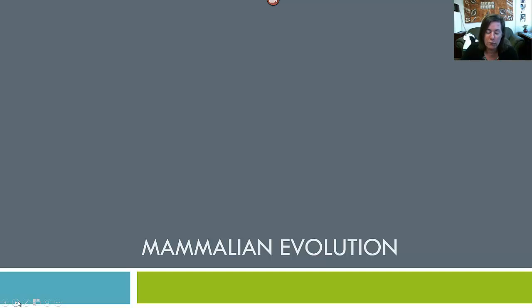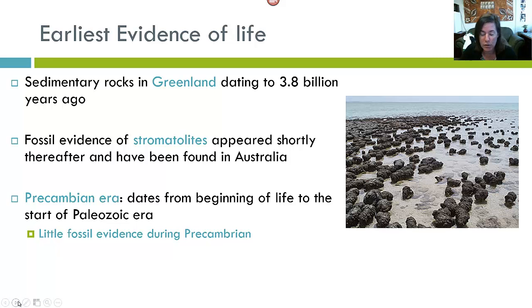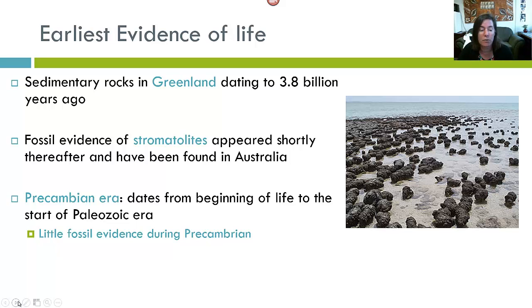This is really important when trying to understand the evolution of major groups of animals. The earliest evidence of life on Earth comes from sedimentary rocks in Greenland dated to about 3.8 billion years ago. Fossil evidence of organisms called stromatolites appear shortly thereafter and have been found in Australia. This fossil material dates to the earliest geological sequence called the Precambrian Era. There is very little fossil evidence we have from this Precambrian Era.